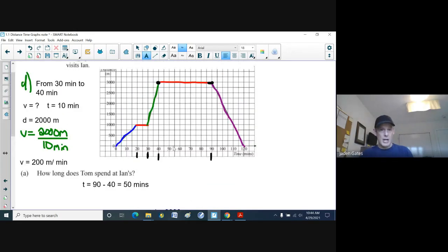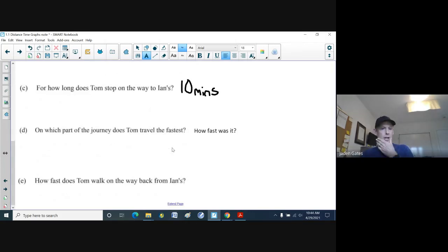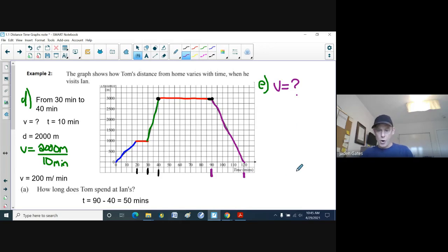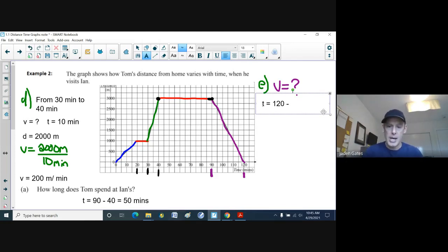And then we get to the last one here, E. How fast does Tom walk on the way back from Ian's? So which part am I looking at here? Blue, green, or purple? The purple. Yeah, purple's on his way back, right? Because that's where he gets back to home base there. So I'm looking at my variable. I'm going to do E right here. Let's go with purple because we're looking at the purple part. So we want to find that speed. And so I need to look at the time here. So he heads back to home at the 90-minute mark. And he gets home at the 120 mark. So if I look at my time, I'm just going to take 120 minus 90. And I get 30, and it's minutes we're dealing with here.